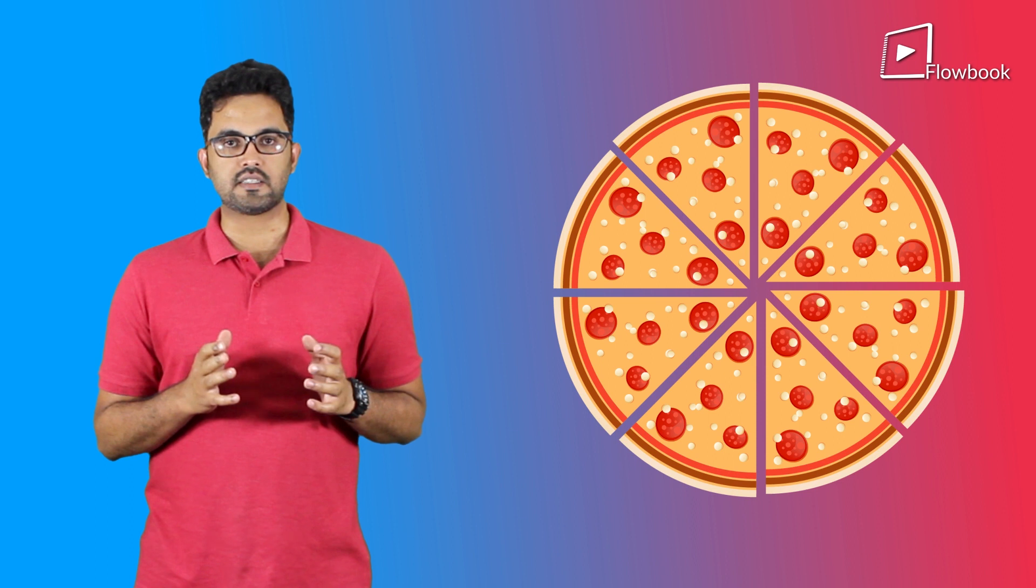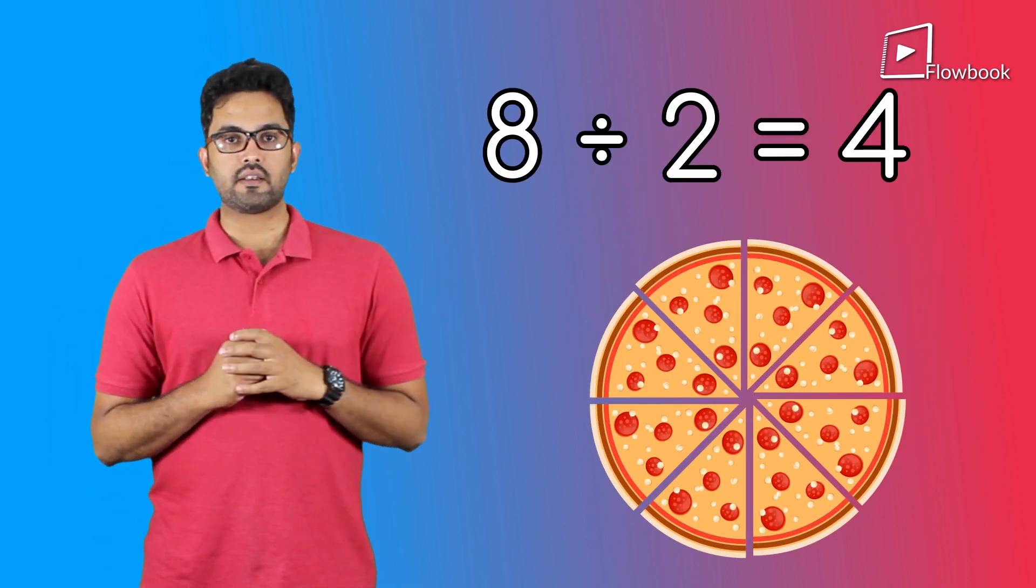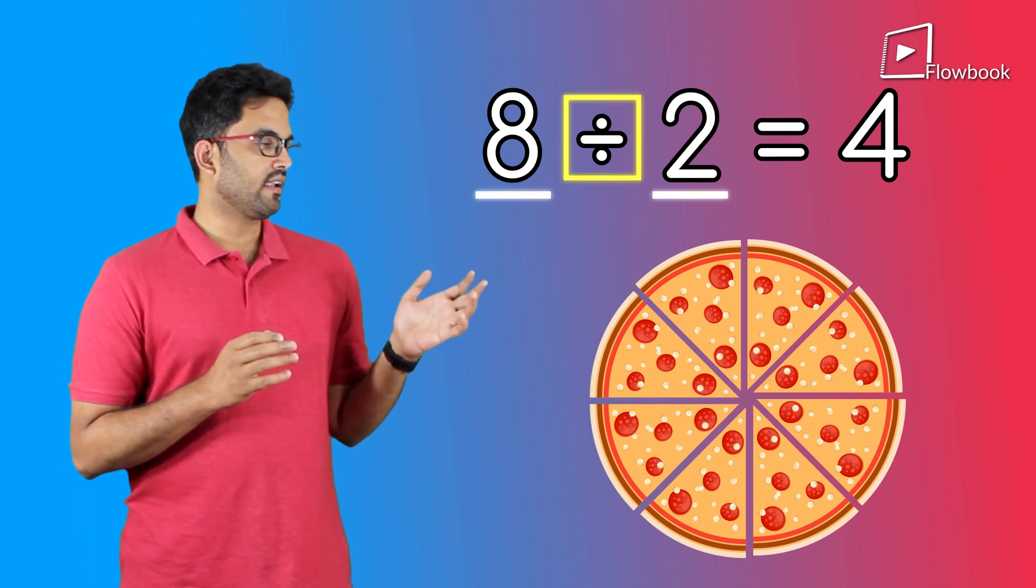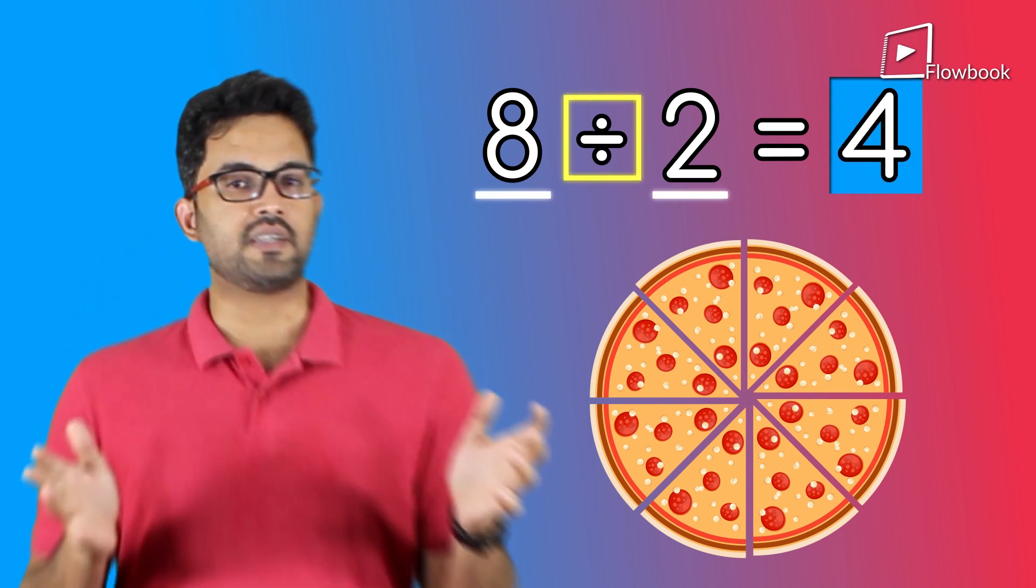Say I have a party and have 4 friends over including me. I have ordered a pizza with 8 slices. How many slices does each one of us get? 8 by 2 equals 4, right? Simple. We have the numbers, we do the calculations and get the final answer. Easy peasy.